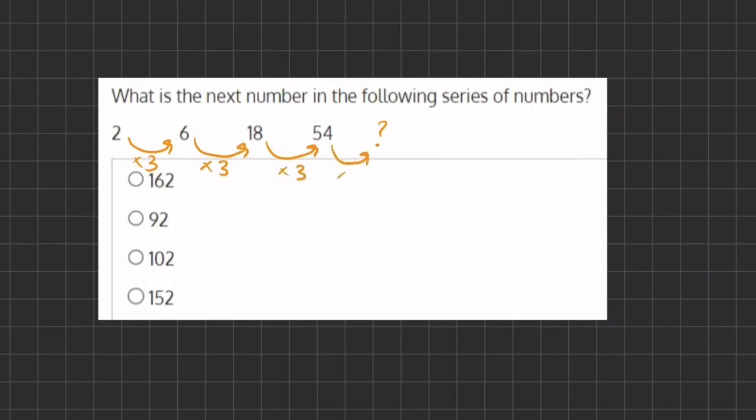Now if we follow this pattern we should multiply 54 times 3 to figure out what our next number is. So 54 times 3 might be a little hard to do in our head, so we can break it up into 50 times 3 plus 4 times 3.